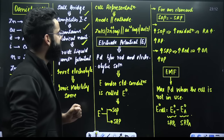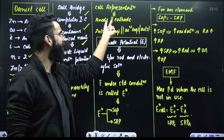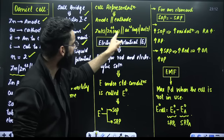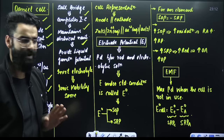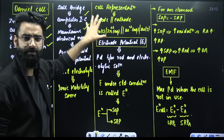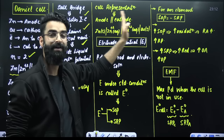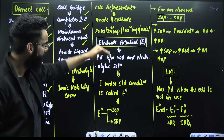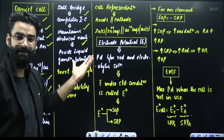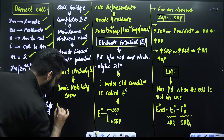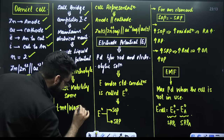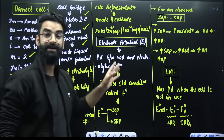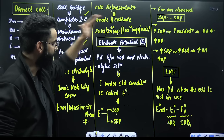In the cell representation, the salt bridge is in the middle; on its left side we always write the anode, and on the right side the cathode. Zinc gets converted into zinc ion (Zn²⁺) in the anodic part, and at the cathode, reduction takes place — Cu²⁺ gets converted into copper solid. The PDF of this session will be shared on the Telegram channel: t.me/wassimsiirchem.